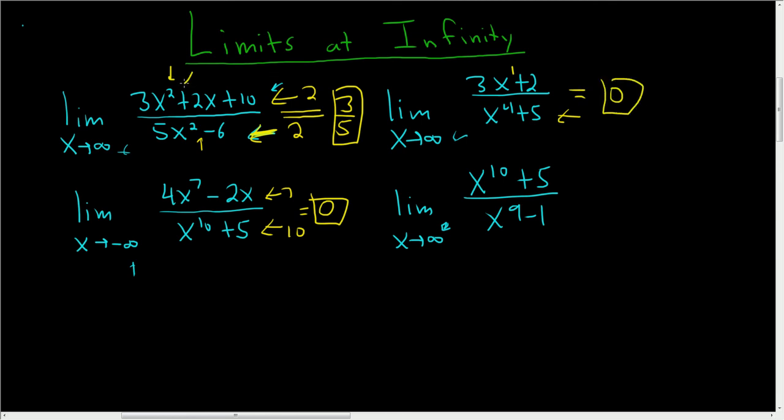So if the degrees are the same, it's just this fraction, 3 over 5. If it's bigger on the bottom, it's 0.